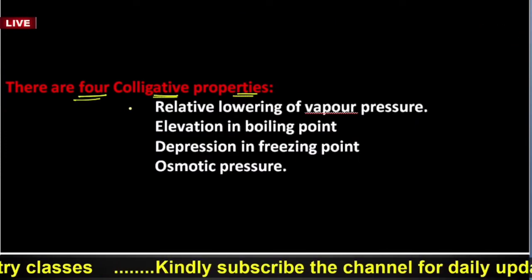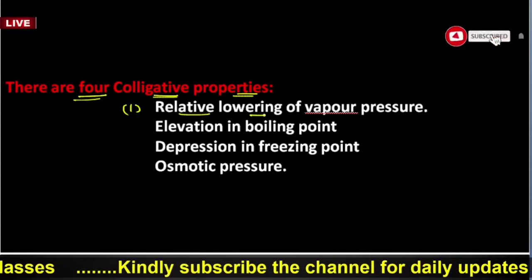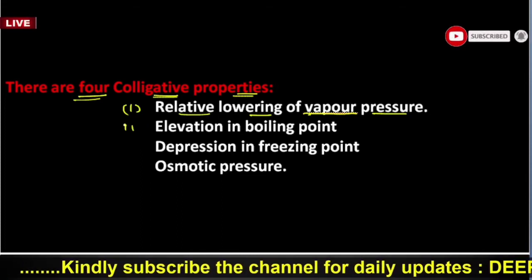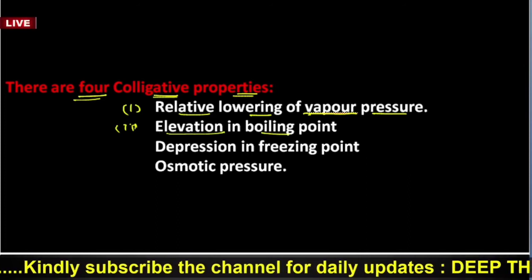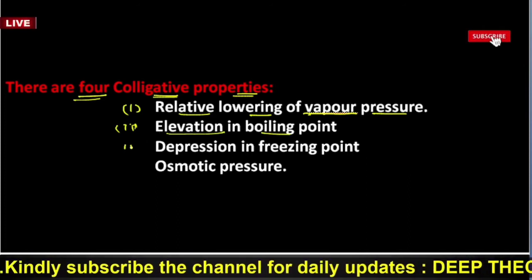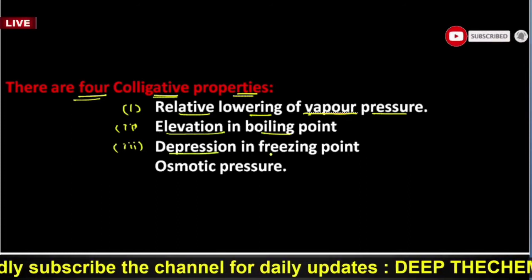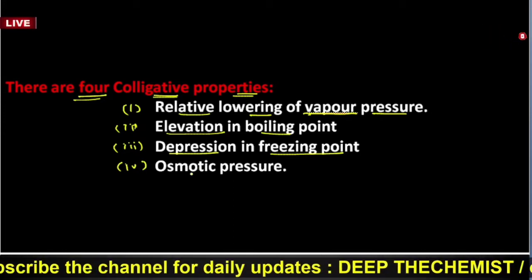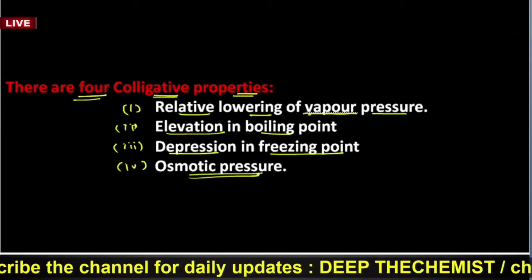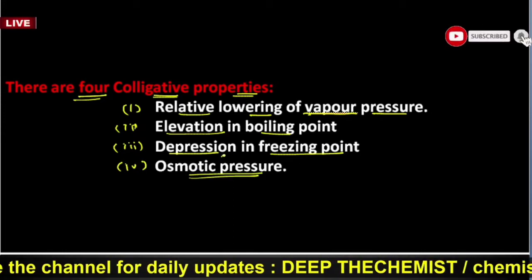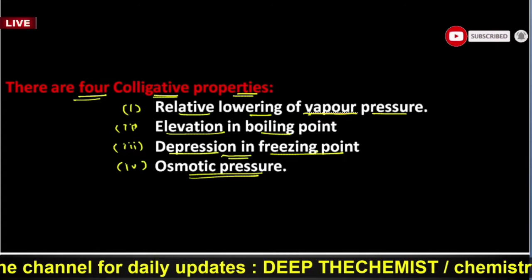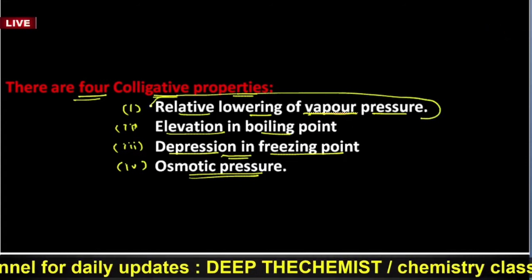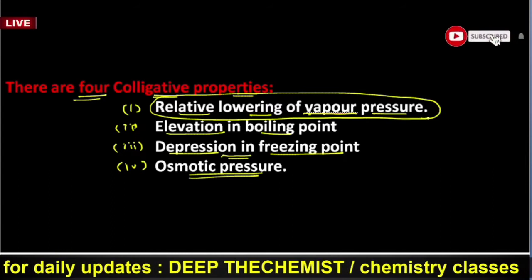There are four types of Colligative Properties. First is relative lowering in vapor pressure. Second is elevation in boiling point. Third is depression in freezing point. And fourth is osmotic pressure.